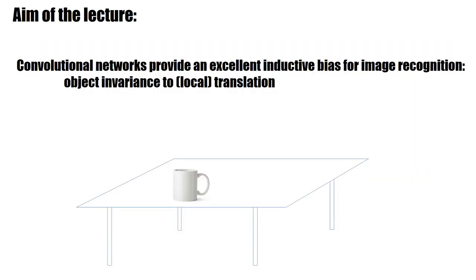Convolutional networks that we will discuss in the following set of videos provide an excellent inductive bias for image recognition, for object recognition on images. And the bias can be formulated like this. A mug on a table is a mug. And that's a mug independent on the location on which it is on that table. So this object, this mug, is invariant. The label mug is invariant to a local translation. And convolutional networks implement this inductive bias in the architecture of the network.